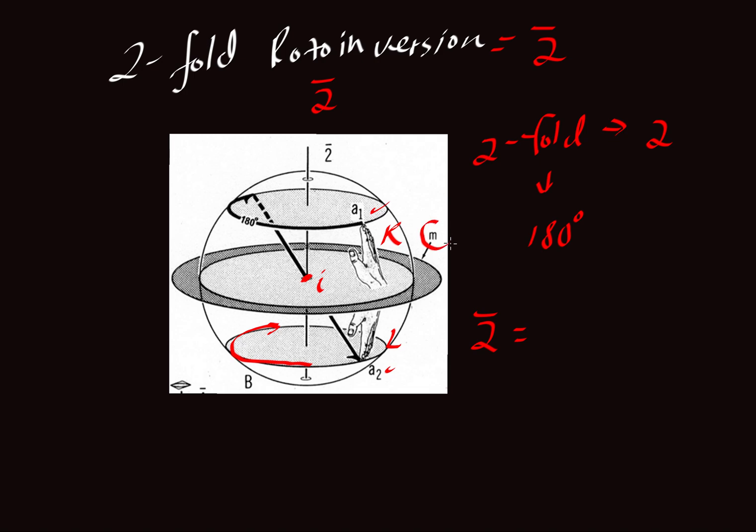It's indicated here by a mirror plane. That dark circle there, that dark shaded area represents a mirror reflection. We can get the same two motifs, this right hand on top and the left hand that is below, by simply reflecting across this plane of symmetry, the mirror plane.